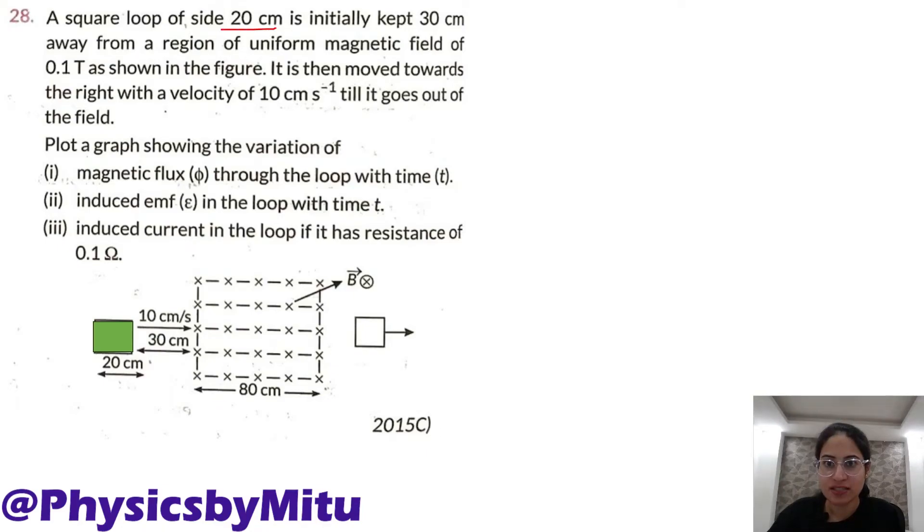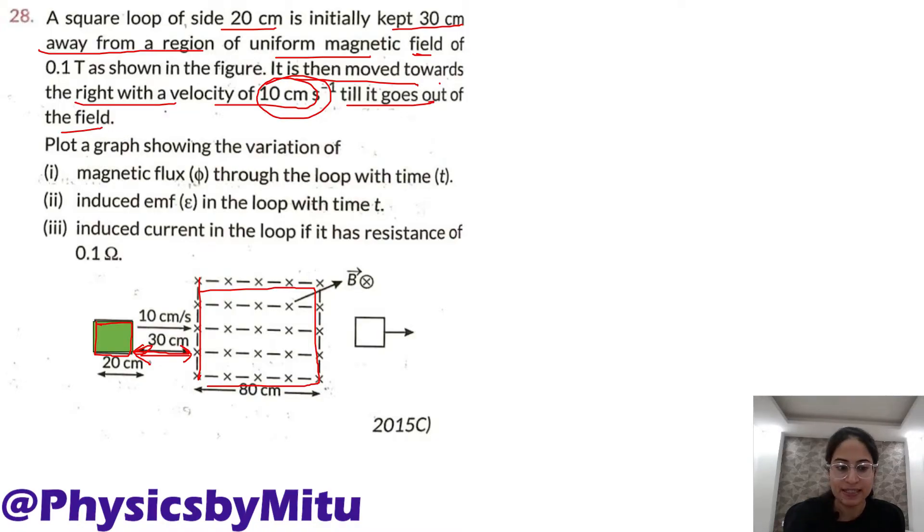A square loop of side 20 cm is initially kept 30 cm away from a region of uniform magnetic field. This is the region of uniform magnetic field. The square loop is kept 30 cm away from this region. It is then moved towards the right with velocity of 10 cm per second till it goes out of the field like this.